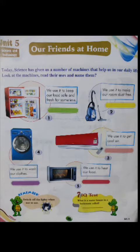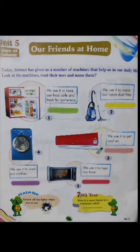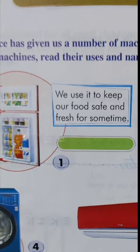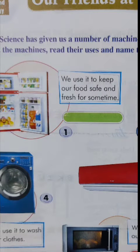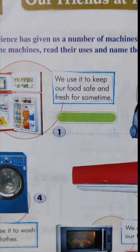These friends are not like human beings - they are the electric appliances which we use in our day-to-day life. They make our life more comfortable, save our time, and make our work easy. The first appliance is the fridge or refrigerator. The main function of a fridge is to keep our food safe and fresh, preserving it for some days.